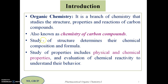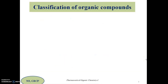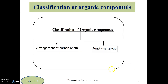Properties include physical and chemical properties and evaluation of chemical reactivity. We need to evaluate chemical reactivity to understand the behavior of these organic compounds. So, let us see the classification of organic compounds. These organic compounds can be classified in two ways: first, based on the arrangement of the carbon chain, and second, depending on the functional group present in them.